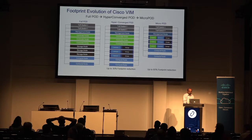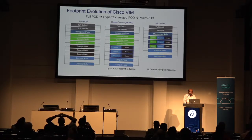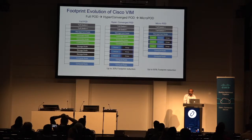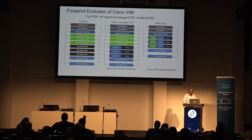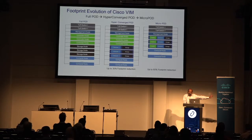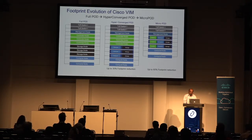In terms of hardware footprint, we started with a full deployment with dedicated controller, compute, and Ceph nodes. Service provider customers said dedicated Ceph nodes burn too much hardware relative to their storage needs, so we introduced hyper-converged nodes that act as both storage and compute. But many customers want to push the cloud to the edge, so we introduced a micropod: three servers acting as controller, compute, and storage — and as compute capacity increases, you simply add more compute nodes. Storage in that solution is limited to the first three nodes.